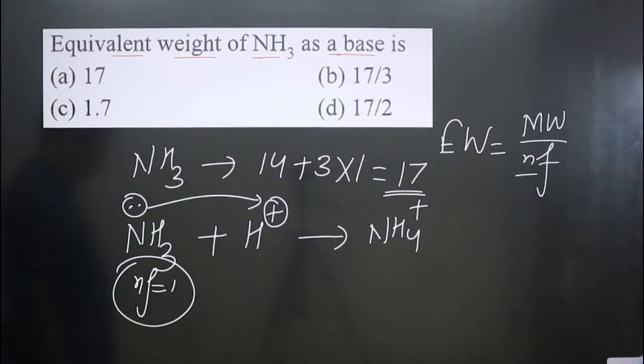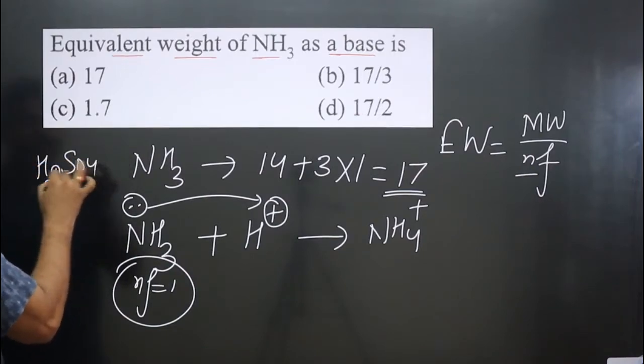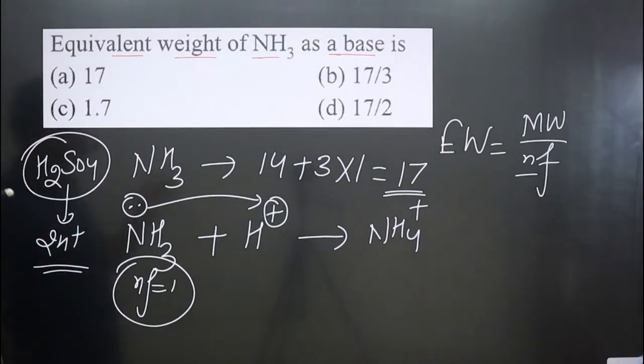For example, if we talk about H₂SO₄, it can liberate two H⁺, so we can say it has an n factor value of 2.